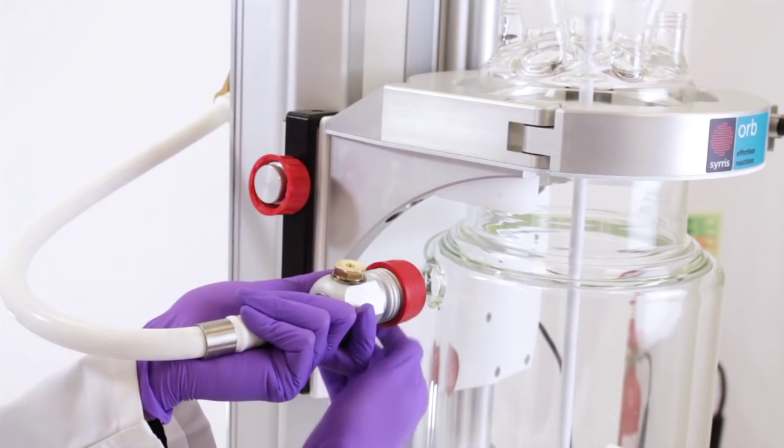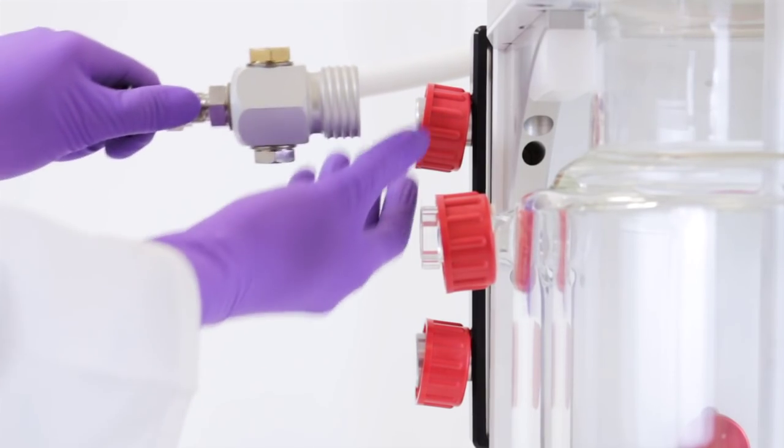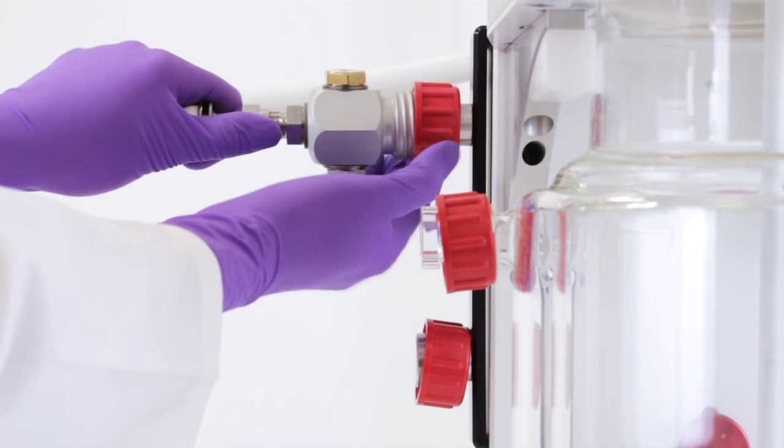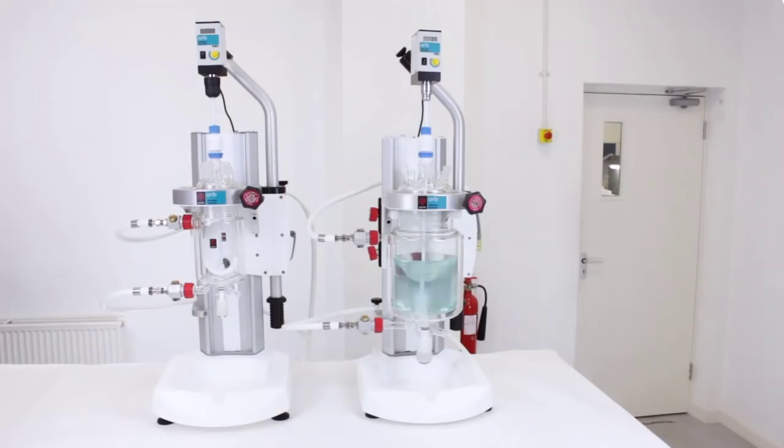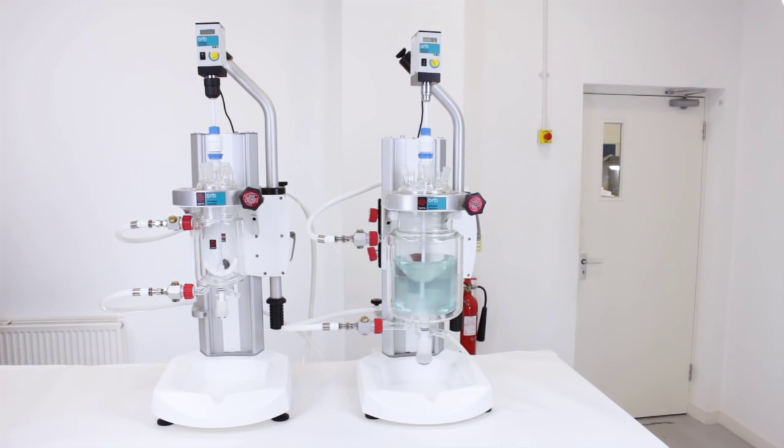Changing vessels on Orb is easy. Orb allows quick and reliable connections of the oil pipes to the jacketed reactor without the need for tools. The stirrer motor can be easily lifted and rotated out of the way for vessel changes.